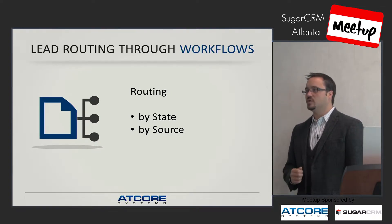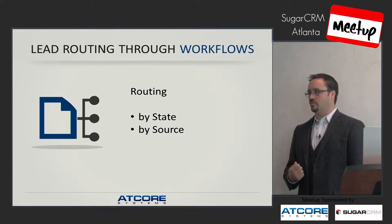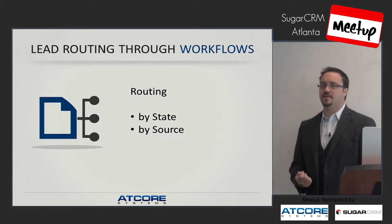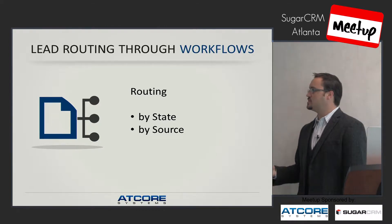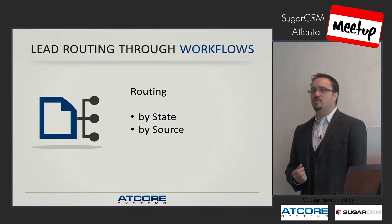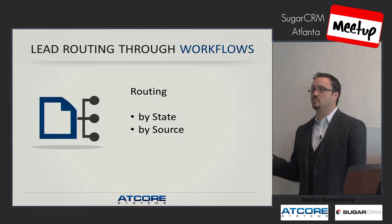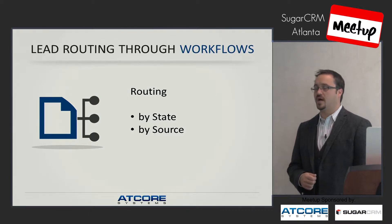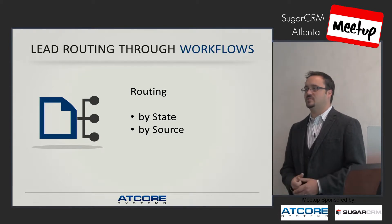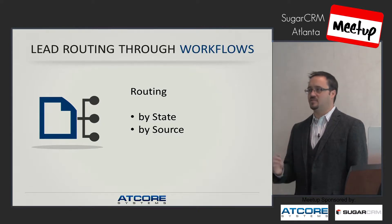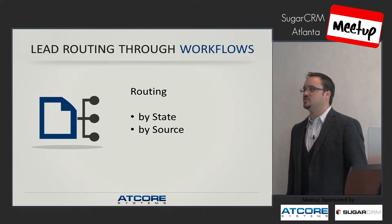One example would be approval workflows — a lead comes in and somebody needs approval to work on it, or a case needs to be escalated. Process Maker has a lot of escalation and approval add-ons. It also does relational mapping. For example, in Sugar, routing by state requires creating many individual workflow rules, whereas Process Maker has lookup tables, making it much easier to manage 50 states with zip codes and other complex logic.